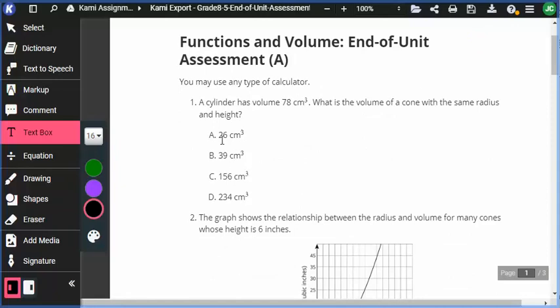Now for number one, a cylinder has a volume of 78 cubic centimeters. What is the volume of a cone with the same radius and height? For this, it's very important to remember a very key relationship when it comes to cylinders and cones. If we use the same height and the same radius, then there is a specific ratio that relates the volume of a cylinder to the volume of a cone.